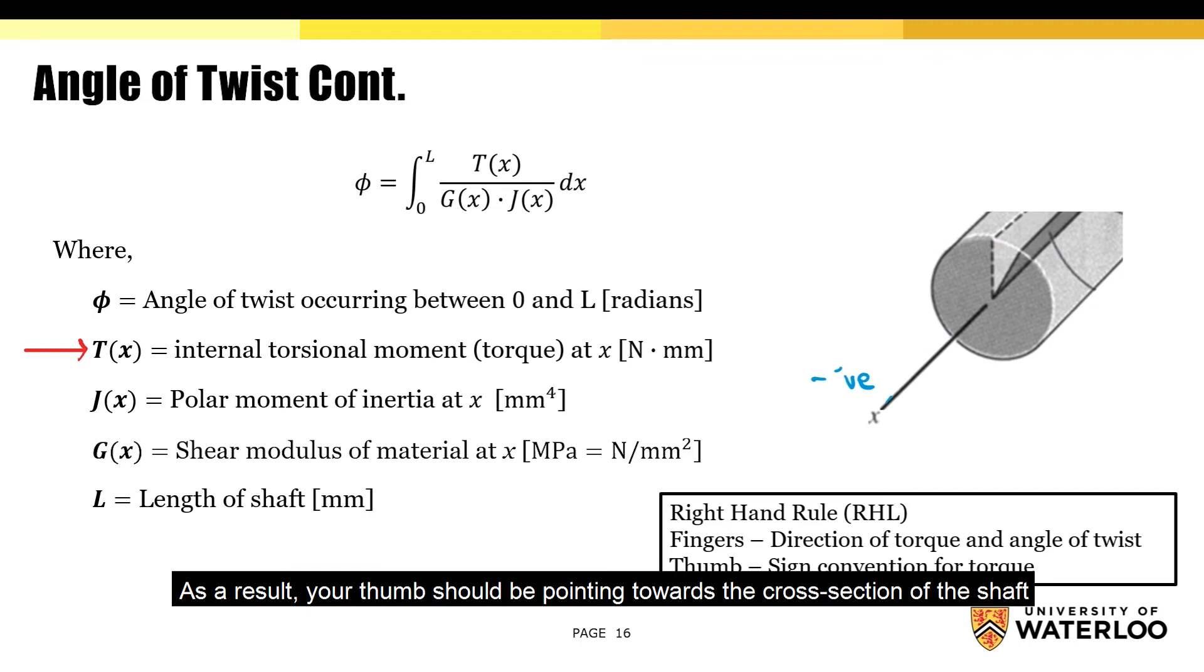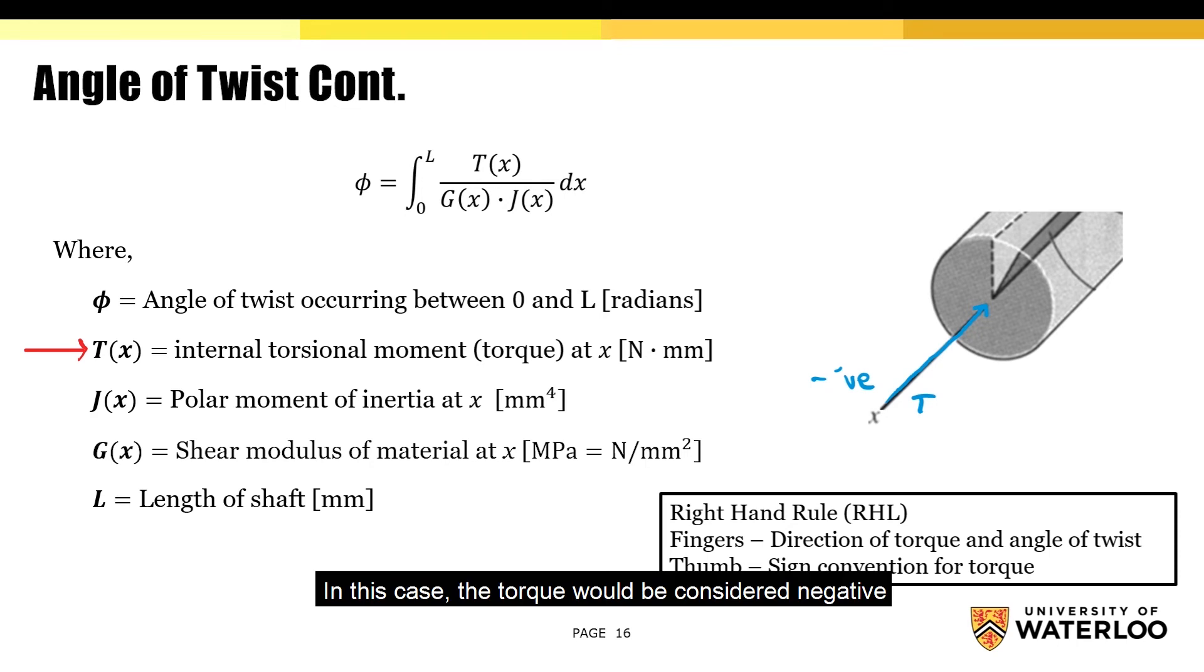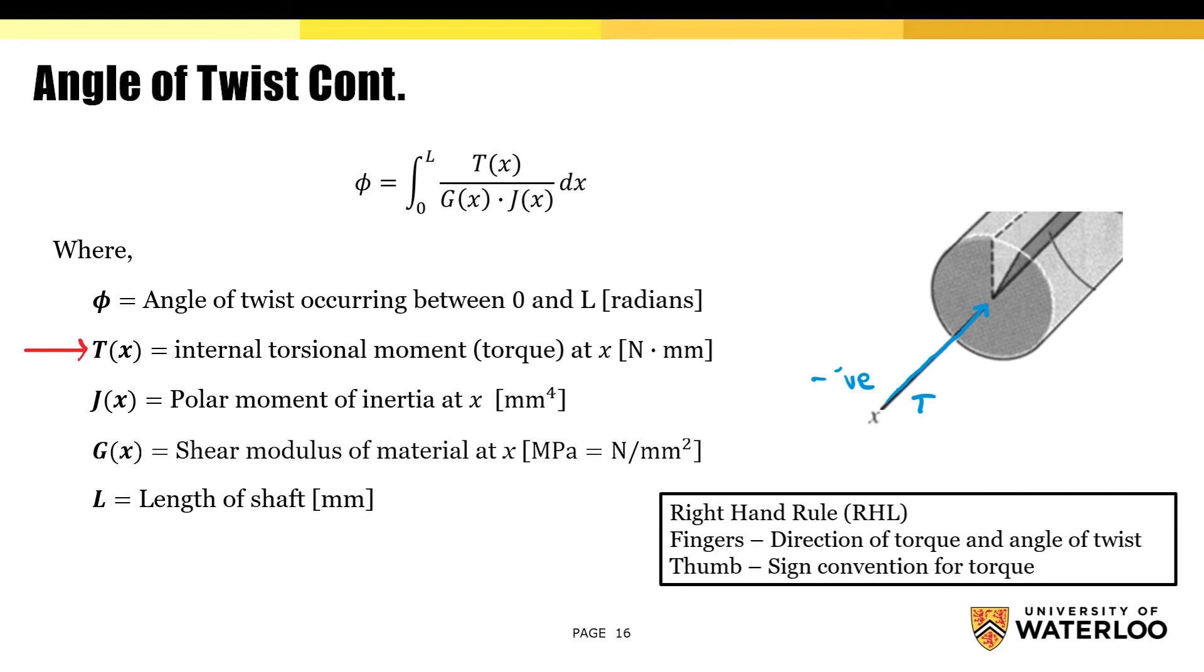As a result, your thumb should be pointing towards the cross-section of the shaft. In this case, the torque will be considered negative because the thumb is pointing towards the surface of the cross-section. Now we'll move on to the next variable.